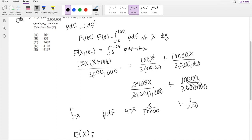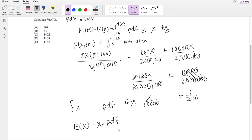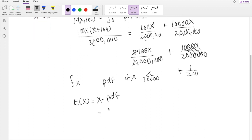So expectation is just equal to x times the probability. So then this is equal to the integral from 0 to 100 of x squared over 10,000 plus x over 200 dx.